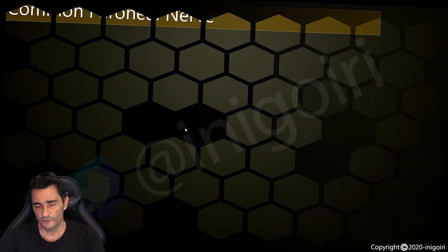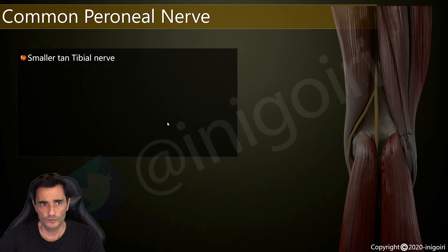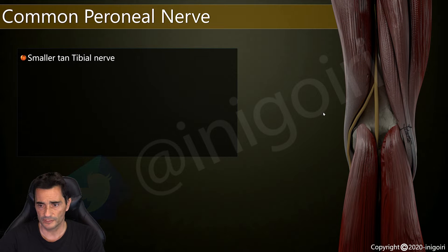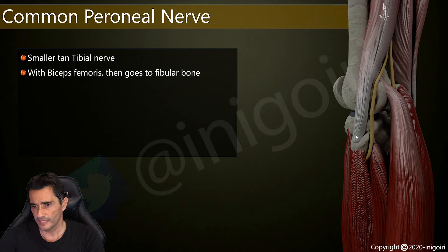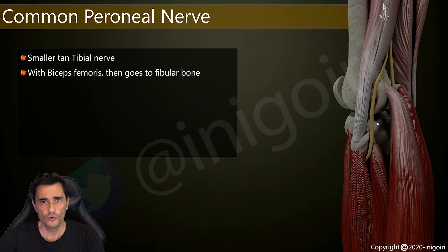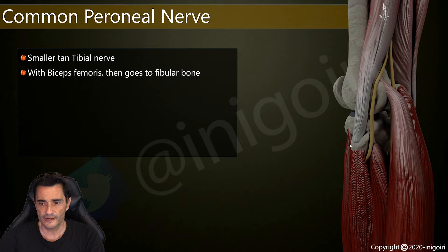The common peroneal nerve is smaller than the tibial nerve, always lateral and related with the biceps femoris. Notice how it becomes very lateral and superficial, running just under the skin. At this level, just reaching the head of the fibula, it becomes very vulnerable and easy to damage. So when you have a patient with symptoms of affection of this nerve, always examine this area carefully.